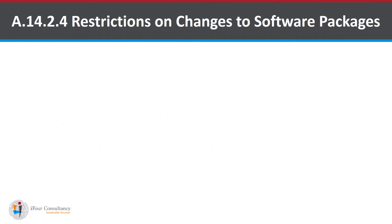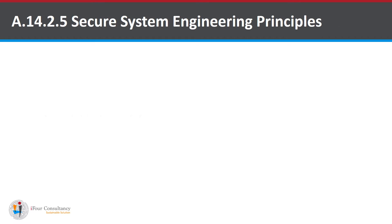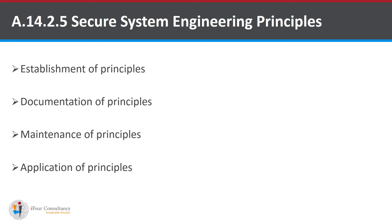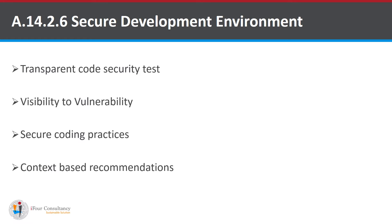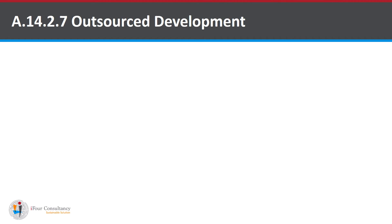The fourth one is Restrictions on Changes to Software Packages. The fifth one is Secure System Engineering Principles. It states that principles for engineering secure systems shall be established, documented, maintained, and applied to any information system implementation efforts. The sixth one is Secure Development Environment. It states that organizations shall establish and appropriately protect secure development environments for system development and integration efforts that cover the entire system development lifecycle.